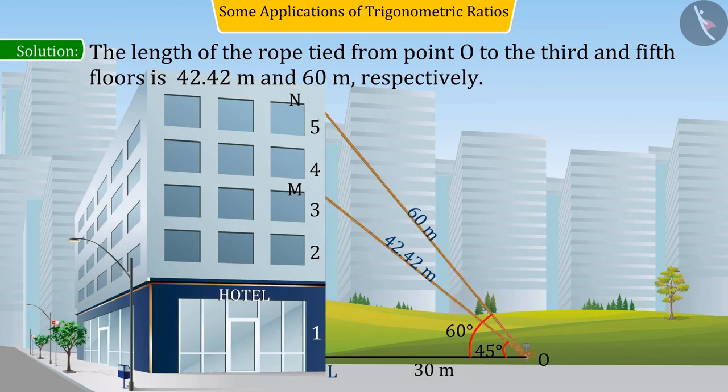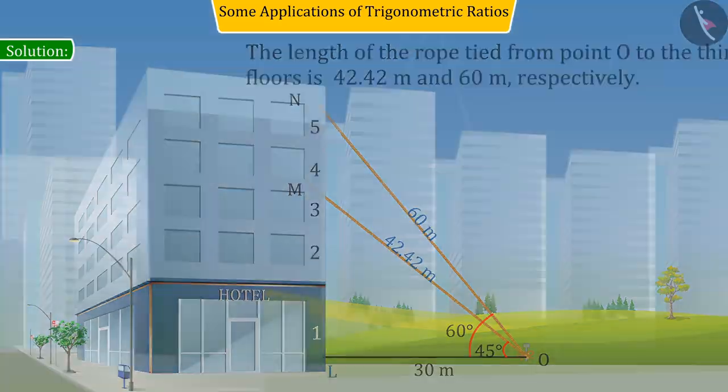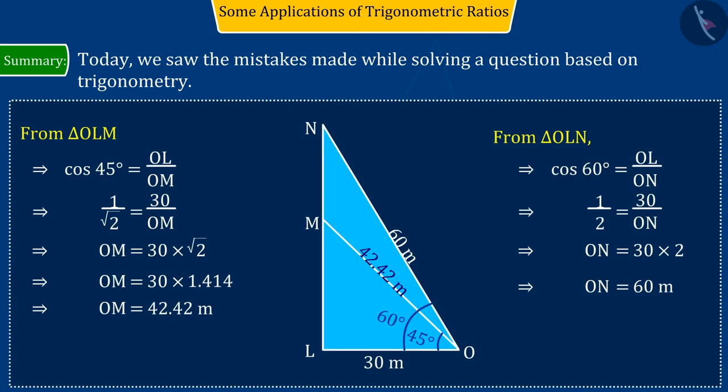Therefore, we can say that the length of the rope from the third and the fifth floor of the building from point O was found by Tarun to be approximately 42.42 meters and 60 meters respectively, which is absolutely correct. So, today, we saw the mistakes made while solving a question based on trigonometry.